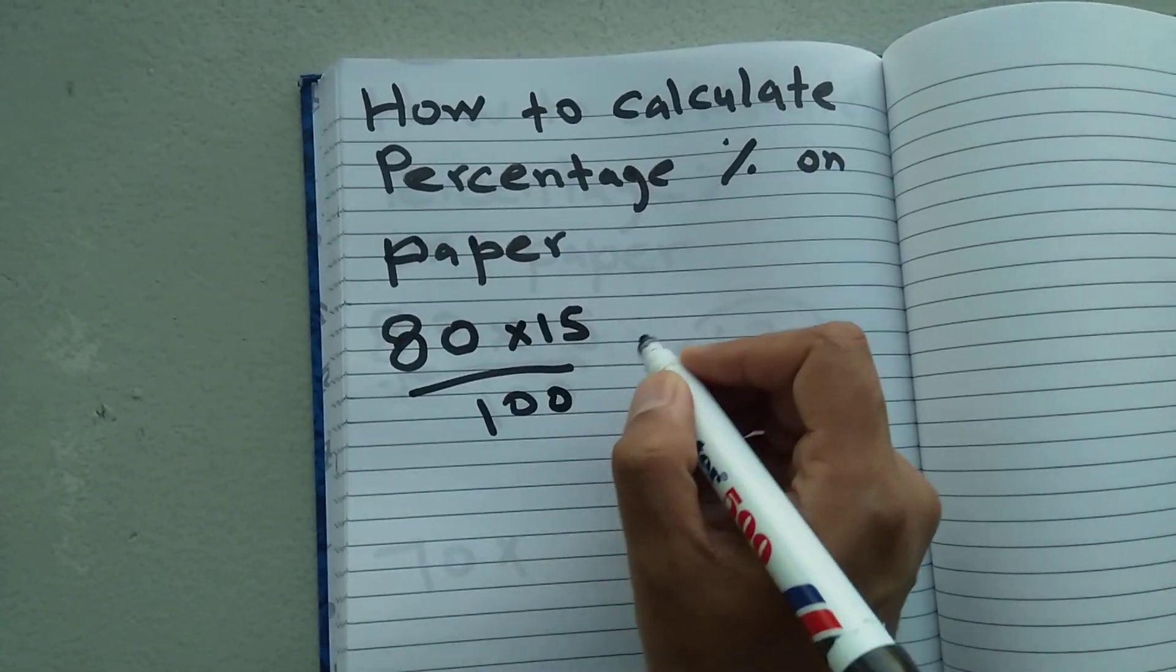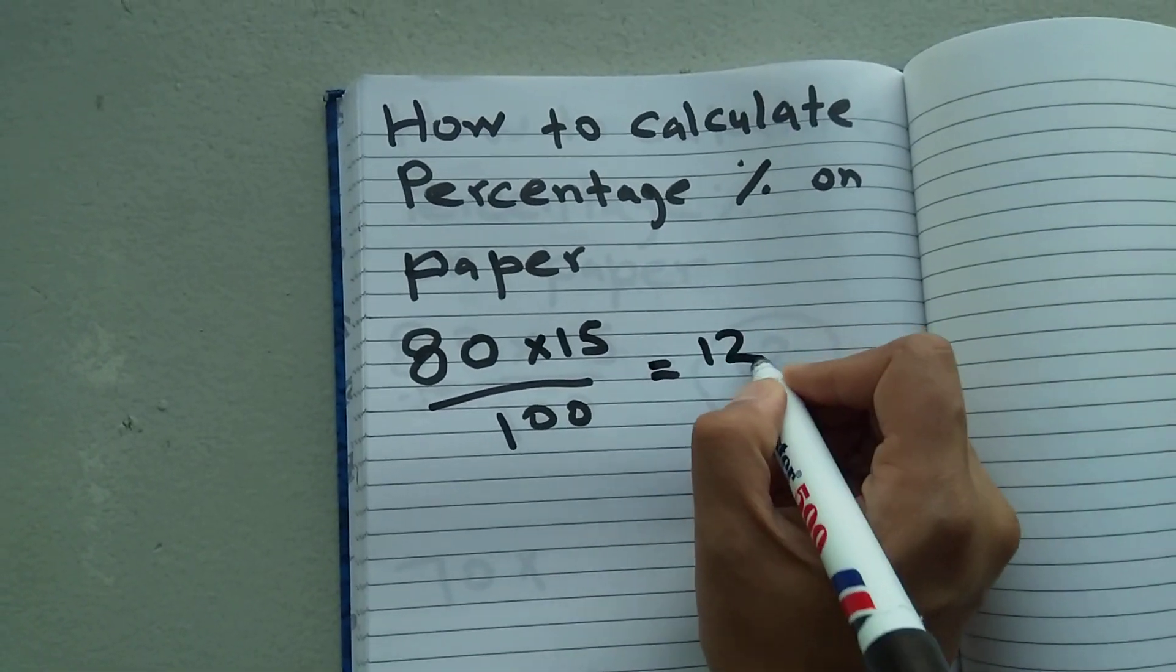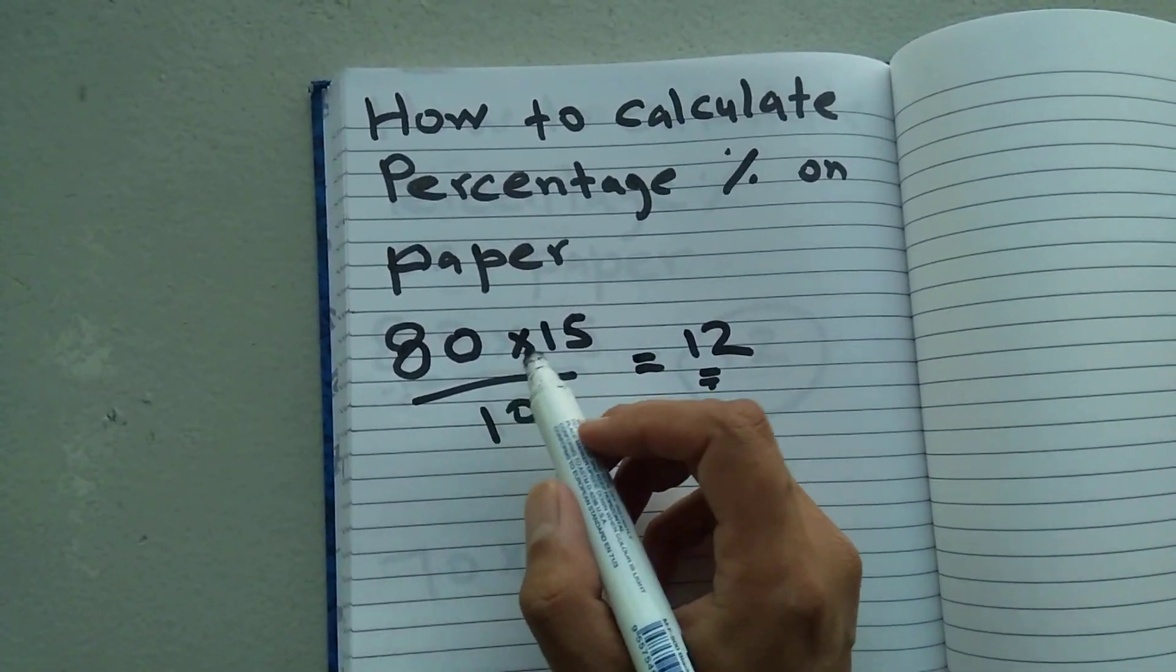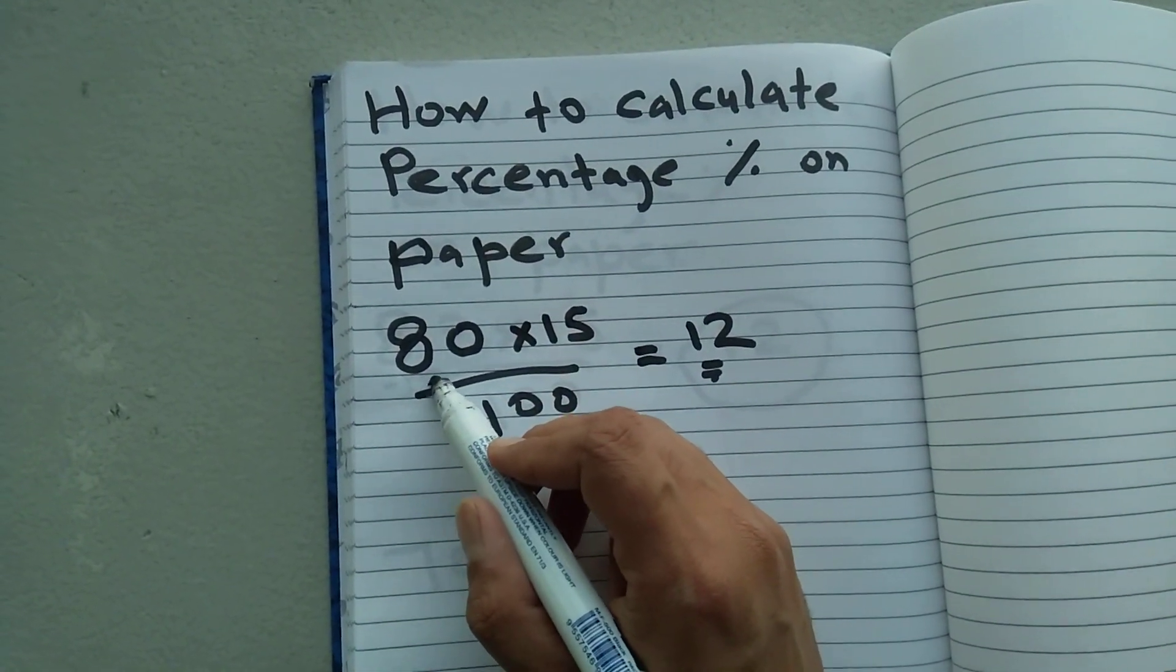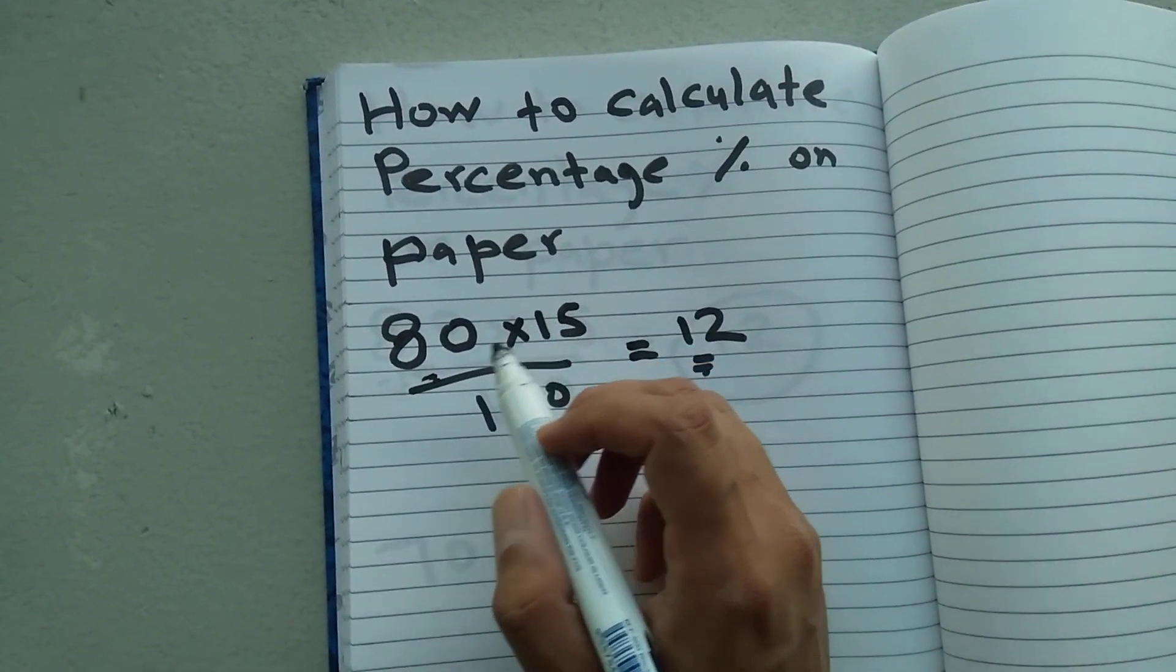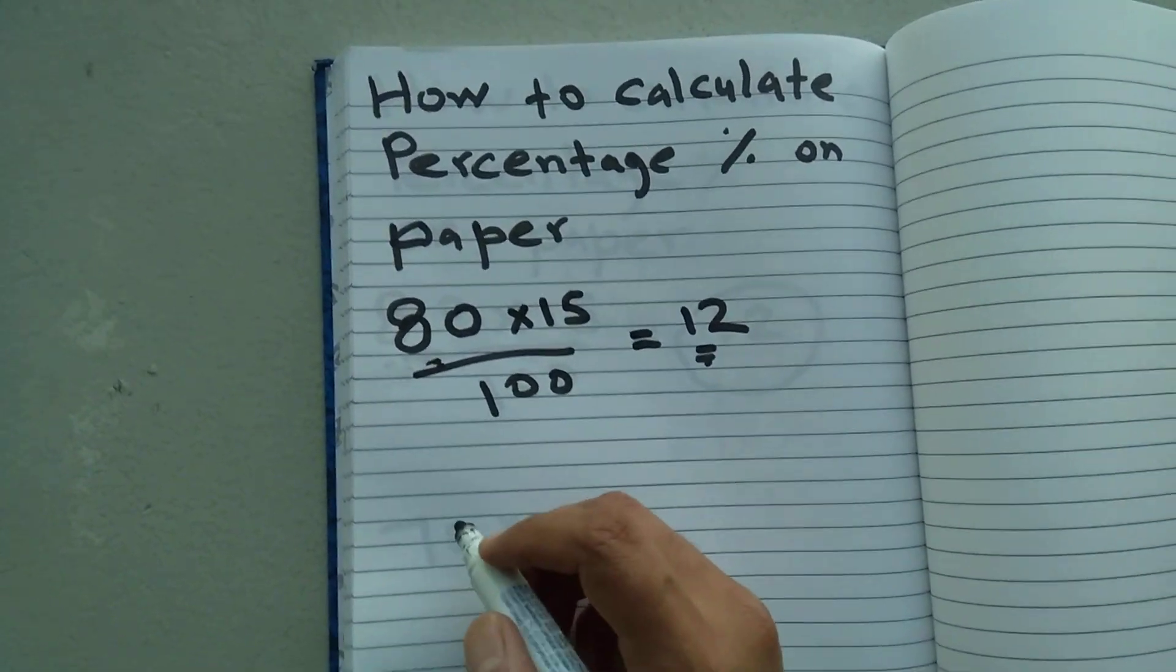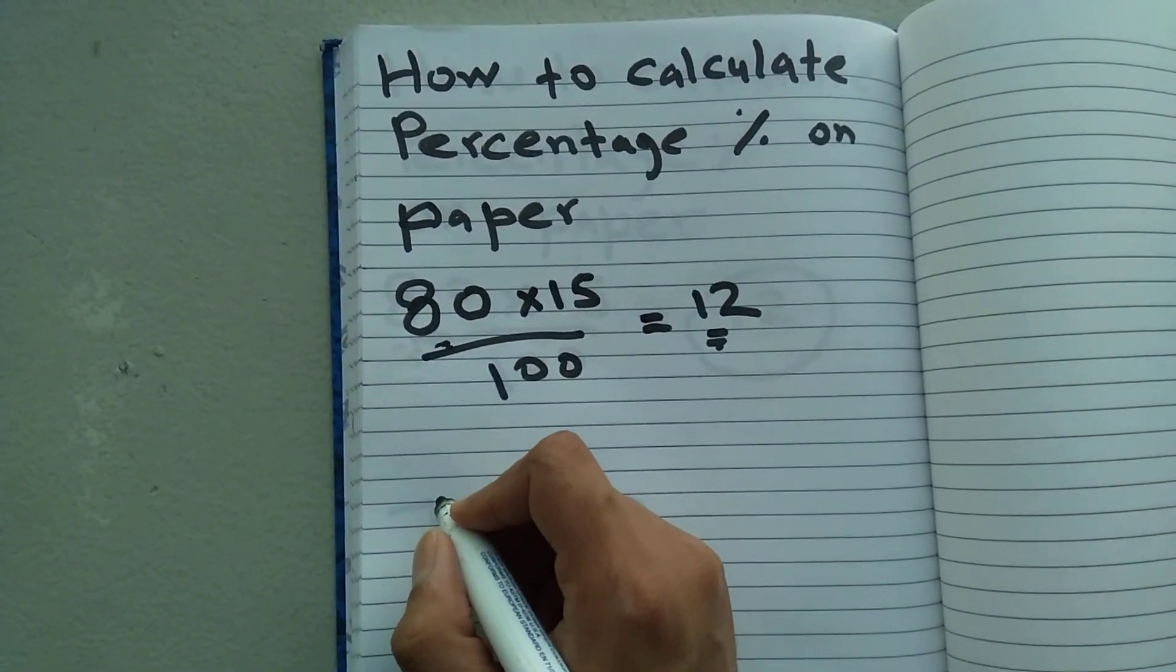The answer will be 12. So this 12 is the 15% of 80. If you want to calculate how much will be the 15% of this value, the answer is 12. 12 is the 15% of 80. Let me show you one more example.